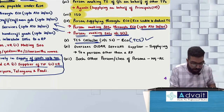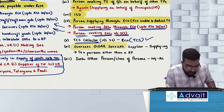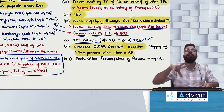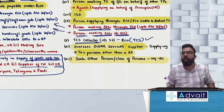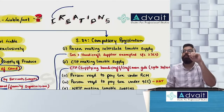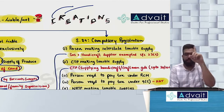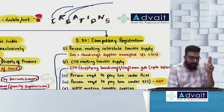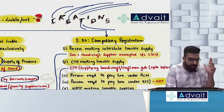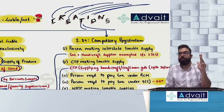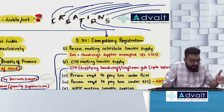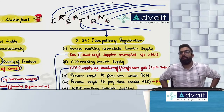If an OIDR (Online Information Database Access and Retrieval) is supplying services to an unregistered person in India, that OIDR has to compulsorily take registration in India. And such other persons as may be notified by the government on the recommendation of the council. A shortcut to remember: CREATION — C for Casual Taxable Person, R for Reverse Charge, E for e-commerce supplier, A for Agent, A for Aggregator, T for TDS collector, I for ISD, O for OIDR, N for NRTP, S for Such other notified persons. TCS collector and Interstate supplier are also included.